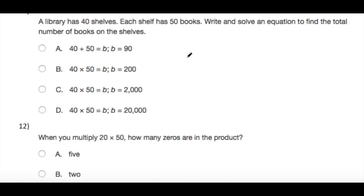A library has 40 shelves. Each shelf has 50 books. Write and solve an equation to find the total number of books on the shelves. 40 shelves times 50 books: it will be two zeros down, and 4 times 5 equals 20, which is 2,000.